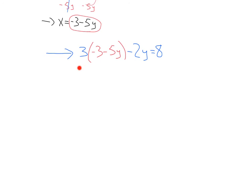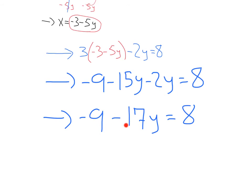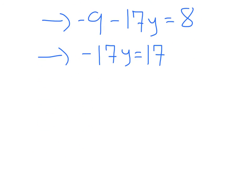Now we need to solve for y. Let's simplify all this out. Distributing this 3, we'll get negative 9 minus 15y minus 2y equals 8. Let's combine our like terms here. That'll give us negative 9 minus 17y equals 8. Isolating this y further, we want to add 9 to both sides. Canceling that 9 out and adding 9 to 8, we get negative 17y equals 17. Finally, if we divide that negative 17 out, we're going to get y equals negative 1. Beautiful.